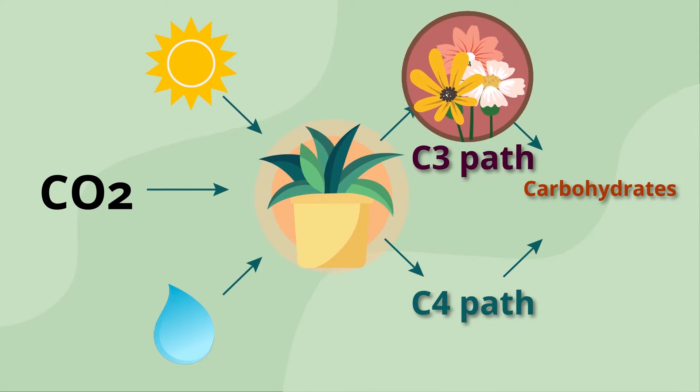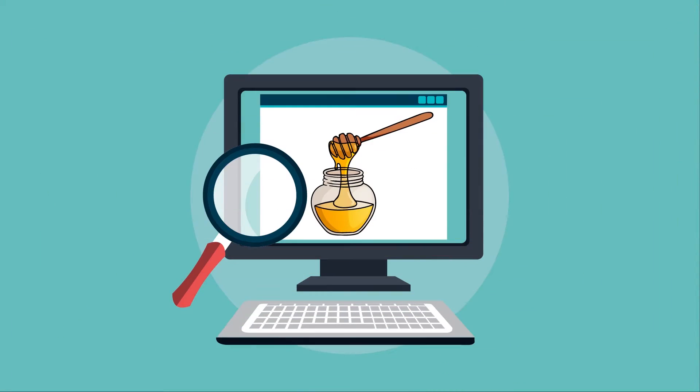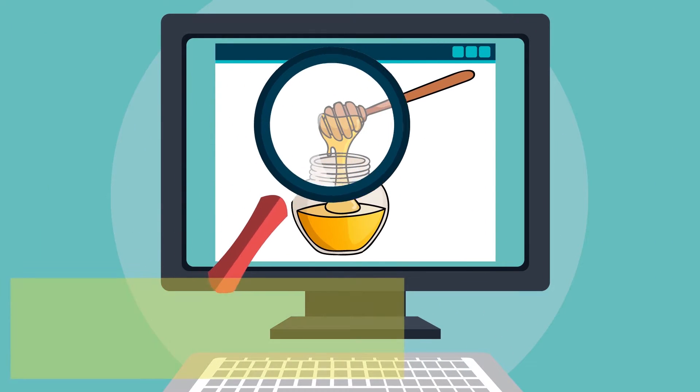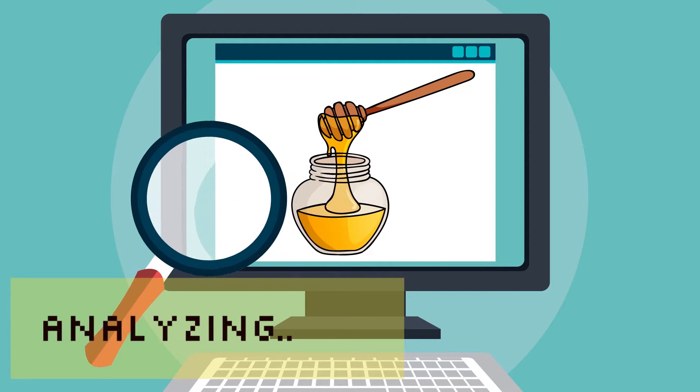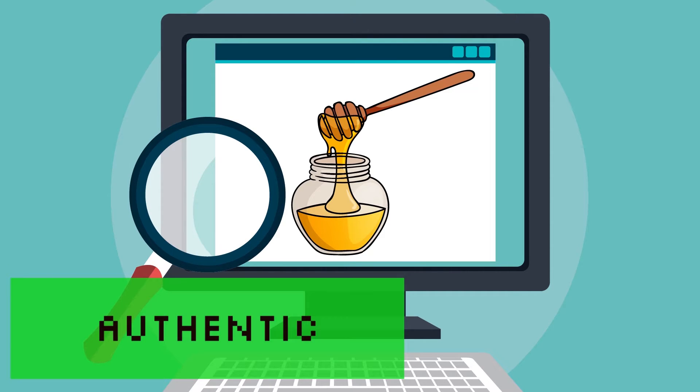Flowers, where bees collect nectar from, produce carbohydrates through the C3 pathway, while adulterants such as corn are C4 plants. The presence of C4 metabolites in honey can suggest that it is adulterated. However, C3 source adulterants are now being used, which makes this an inaccurate testing method.